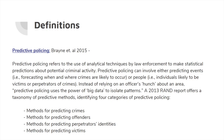Predictive policing refers to the use of analytical techniques by law enforcement to make statistical predictions about potential criminal activity. It can involve either predicting events — forecasting when and where crimes are likely to occur — or people, meaning individuals likely to be victims or perpetrators of crime. Instead of relying on an officer's hunch, predictive policing uses the power of big data to isolate patterns.